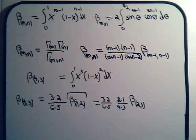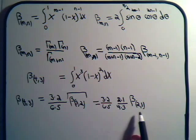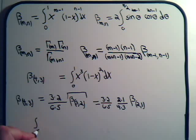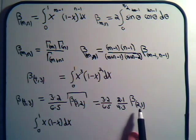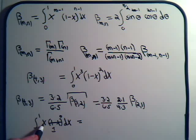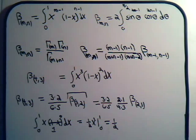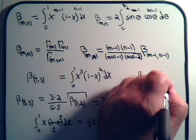We have to stop here because if we attempt to apply the reduction formula to beta(2,1), the numerator has (m minus 1) = 1, and 1 minus 1 is 0, so we can't reduce further. In integral form, beta(2,1) is the integral from 0 to 1 of x to the (2 minus 1) times (1 minus x) to the (1 minus 1) dx, which simplifies to the integral of x dx. That gives 1/2 x squared from 0 to 1, so beta(2,1) = 1/2.